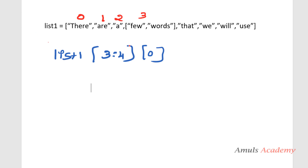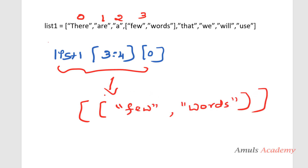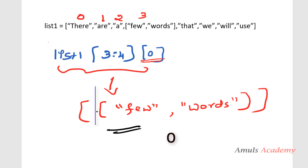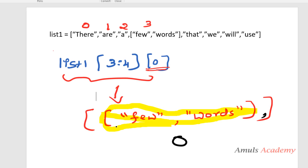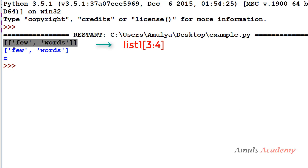From list1[3:4] we already got the output as a list containing one element. Using [0] we want the first element — the element at the zeroth index. That sliced list contains only one element, which is the inner list ['few', 'words'], so list1[3:4][0] returns that inner list directly.